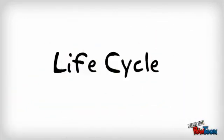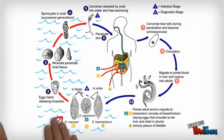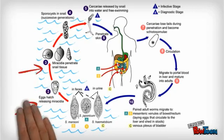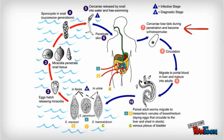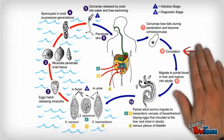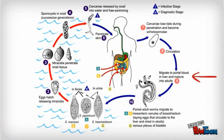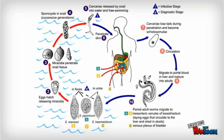Life cycle: First, the eggs hatch releasing the miracidia. The miracidia penetrate the snail tissue, and after two generations of replication, a fork-tailed cercaria emerges into the water. The cercaria penetrates the skin and loses its tail to become a schistosomulae. It then enters circulation, travels through venous circulation to the heart and lungs, and migrates into the portal system to the liver where they mature into adults. In about three weeks, they mature and reach the mesentery or bladder vessels where they live and ovulate for the duration of the host's life. The eggs germinate as they pass through the vessel wall into the intestine or bladder and are excreted in the feces or urine.